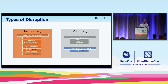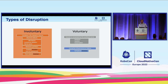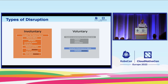Voluntary disruptions are all other cases, and can be subdivided into categories. The first category includes those initiated or consented to by the workload owners. We as workload owners can delete pods manually through kubectl, delete deployments or controllers responsible for our pods, update deployments causing a rolling update where all pods will be removed, or use automation like horizontal pod autoscaler, which can result in pod removal due to scale-down events.